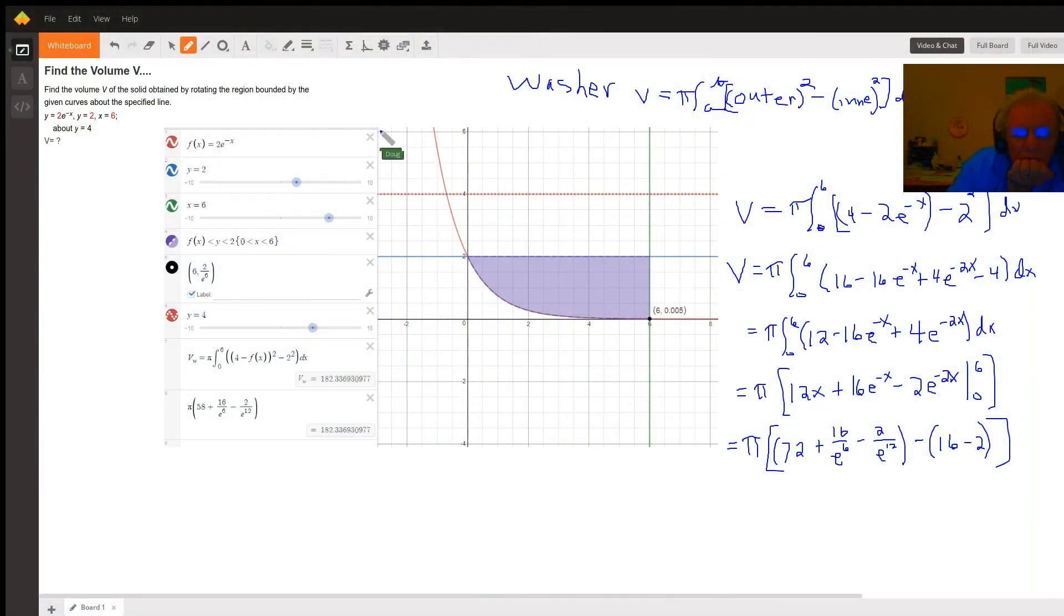This picture I pulled from the Desmos online graphing calculator. I've graphed the function f of x equals 2e to the minus x, which is this curve right here. The boundary is y equals 2, which is this blue line, and x equals 6.